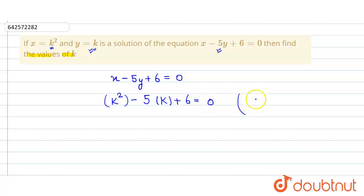The reason is because the point (k², k) is a solution of the given linear equation. So we get k² minus 5k plus 6 equals 0. So this is in the form of a quadratic equation.